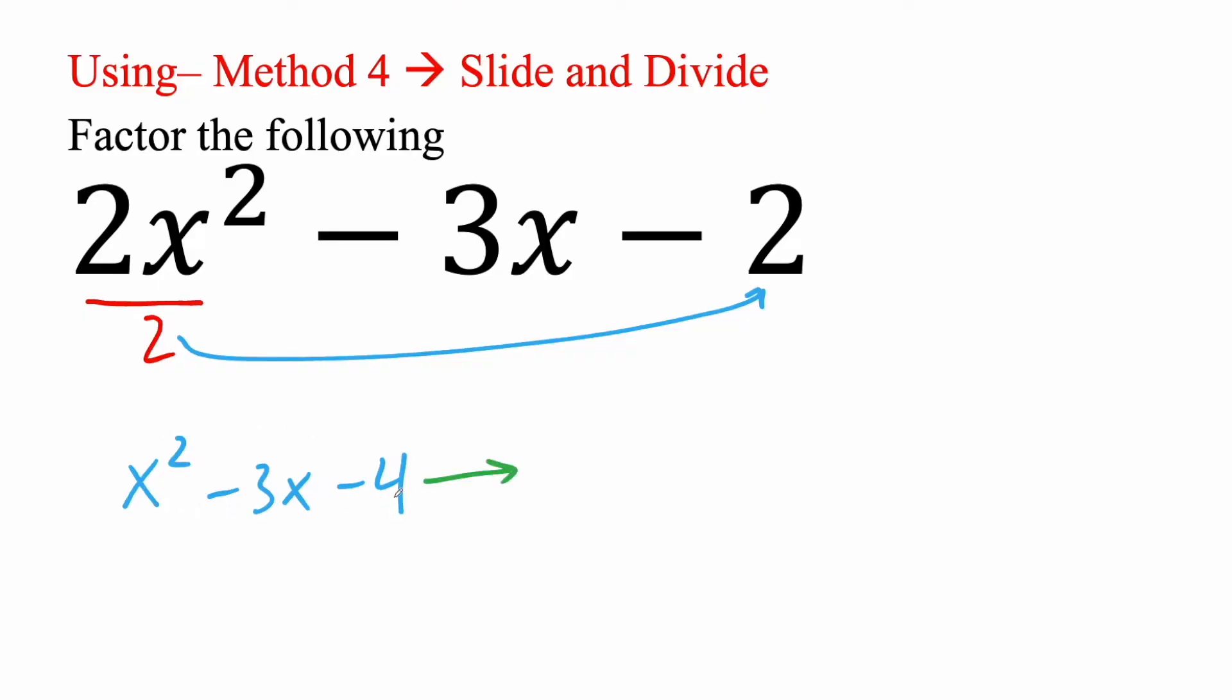And so at this point I'm just going to factor this piece right here. And because it's an x squared it's a lot easier. So I have x parentheses x parentheses. We think what two numbers multiply to give us negative 4 but add to give us negative 3.